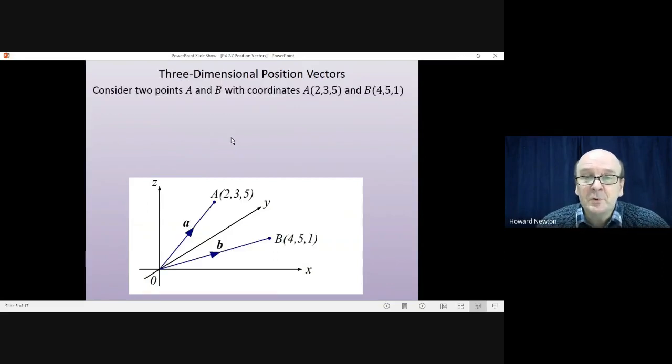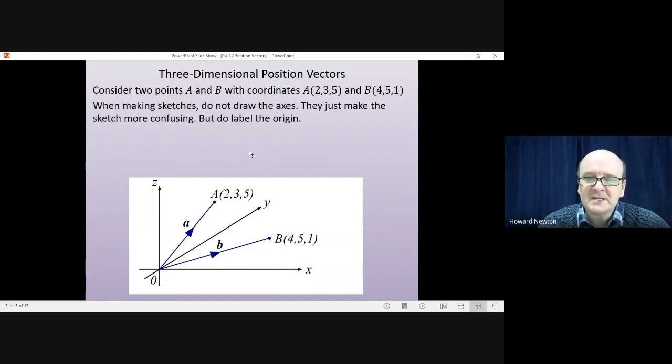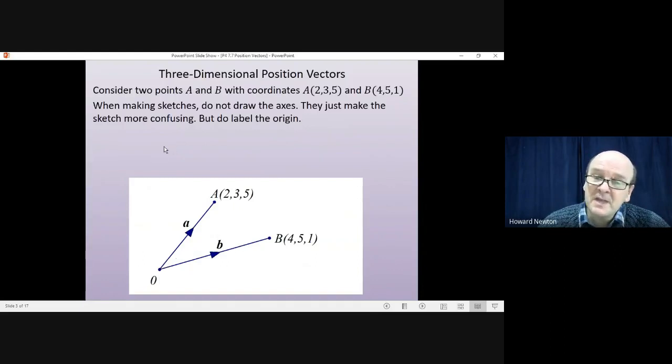If we consider two points, A and B, with coordinates (2,3,5) and (4,5,1), the first thing is with sketches, there's very, very rarely any value in drawing the coordinate axes. They just make the sketch more confusing. So I wouldn't draw the axes, but I would draw the origin. The origin is always helpful to have. Getting rid of the axes, then that's what the sketch would become.